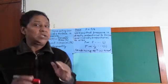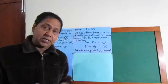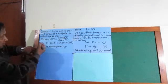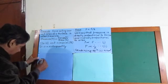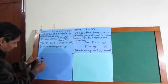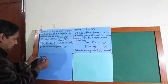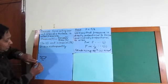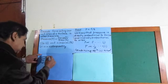Force acting per unit area of a surface is called pressure. This is the definition of pressure. We can describe this more clearly: this is 1 meter length and 1 meter breadth, and this surface is bounded by 1 meter length and 1 meter breadth, that's why its area is 1 meter square.